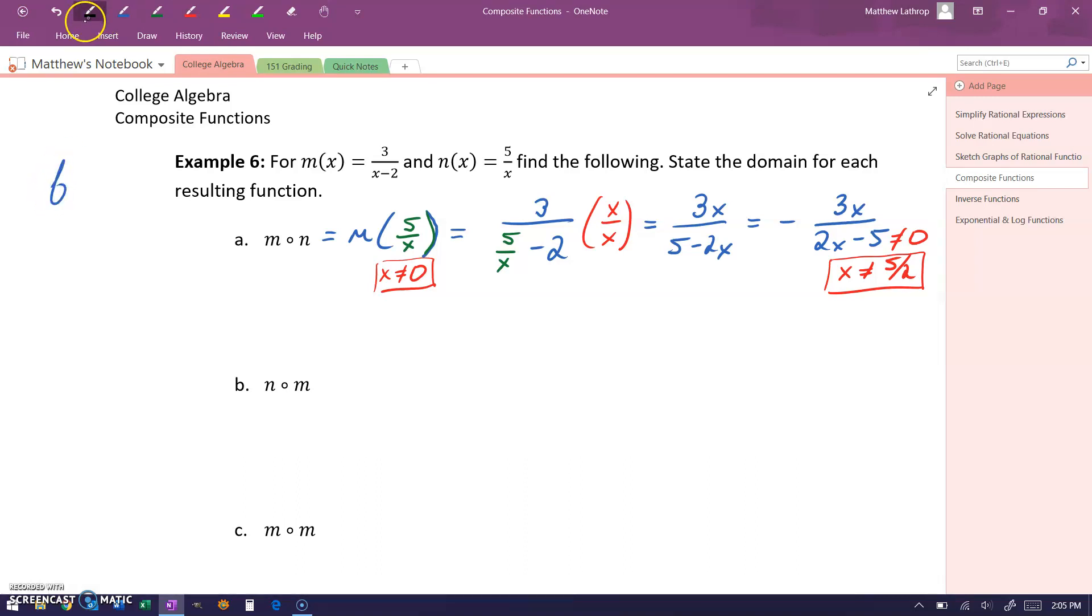So this gives us an example of how we verify any domain restrictions for a function composition f of g. What we want to do is find any restricted values for, one, g of x, whichever function comes second, or whichever function is being plugged into that first function.